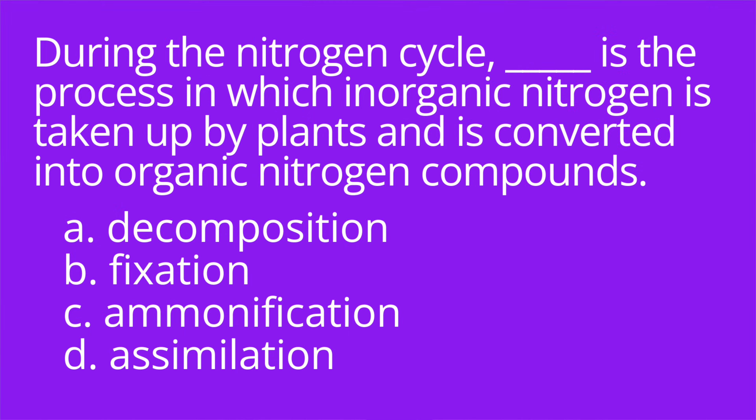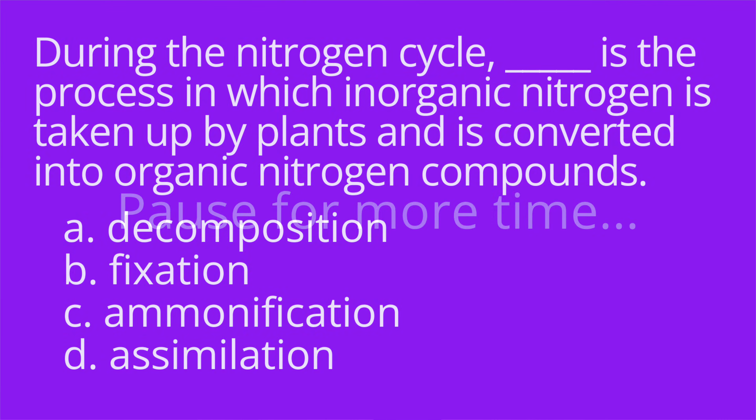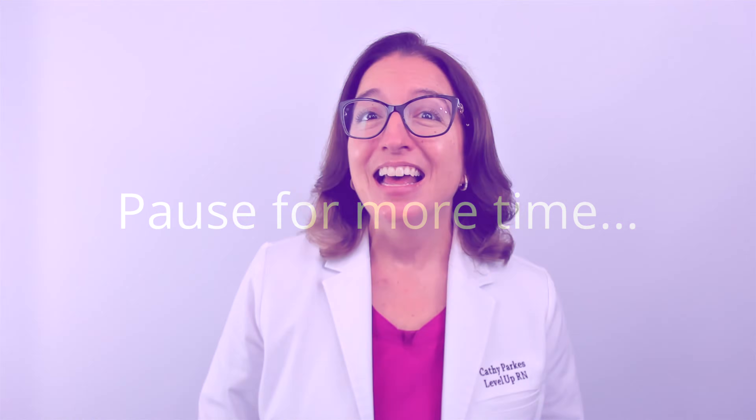Number four. During the nitrogen cycle, blank is the process in which inorganic nitrogen is taken up by plants and converted into organic nitrogen compounds. A, decomposition. B, fixation. C, ammonification. D, assimilation. The answer is D, assimilation.